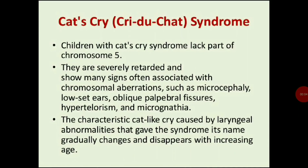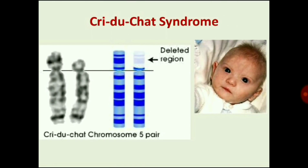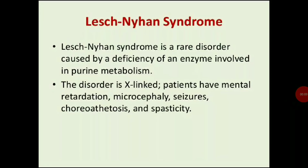Cri du Chat syndrome (Cat's Cry): Children lack part of chromosome 5. They are severely retarded and show signs such as microcephaly, low-set ears, oblique palpebral fissures, hypertelorism, and micrognathia. The characteristic cat-like cry caused by laryngeal abnormalities gradually changes and disappears with increasing age. Lesch-Nyhan syndrome is a rare disorder caused by deficiency of an enzyme involved in purine metabolism. It is X-linked; patients have mental retardation, microcephaly, seizures, choreoathetosis, and spasticity.